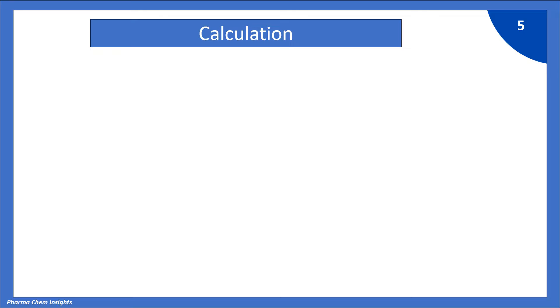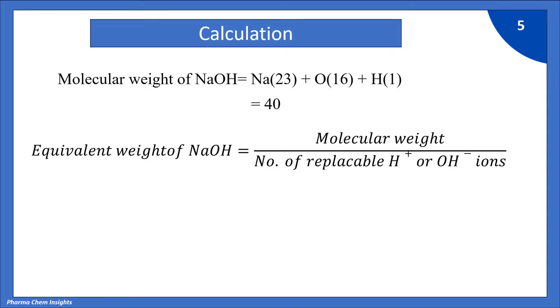Now let us see the calculation. Molecular weight of NaOH that is sodium 23 plus oxygen 16 plus hydrogen 1. By adding all this we get 40. So equivalent weight of NaOH is equal to molecular weight divided by number of replaceable H+ or OH- ions. In the case of NaOH the number of replaceable OH- ions is 1. So 40 divided by 1 is equal to 40. So equivalent weight of NaOH is 40.